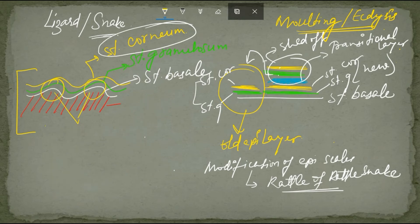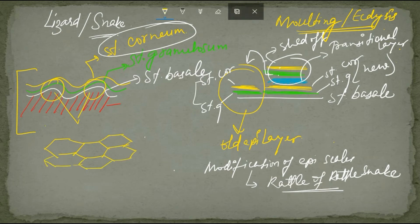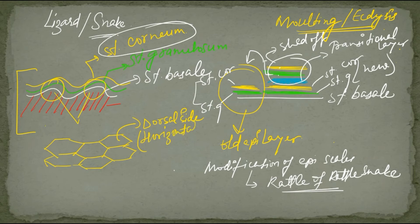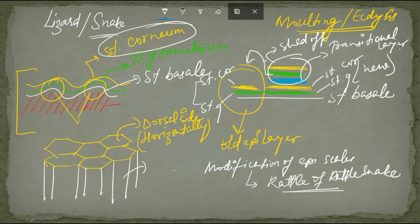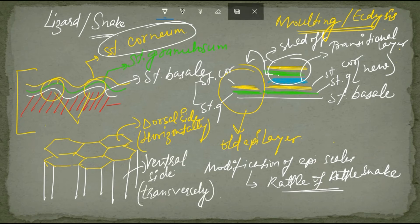In snakes, scales are arranged differently on different surfaces. On the dorsal surface, scales are horizontally arranged, while on the ventral side they are transversely arranged.